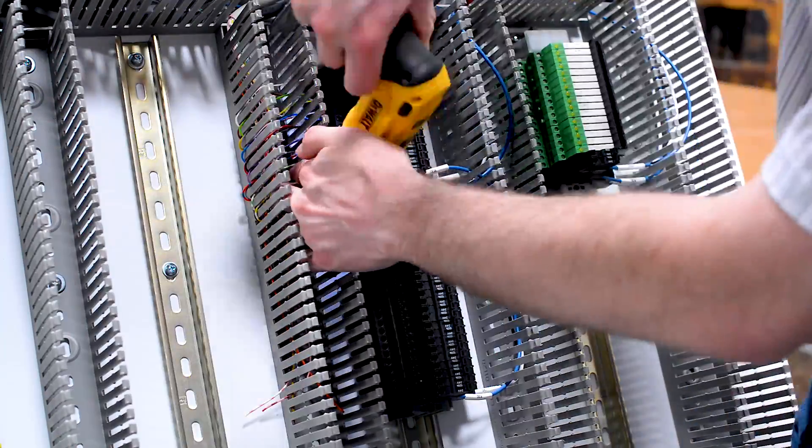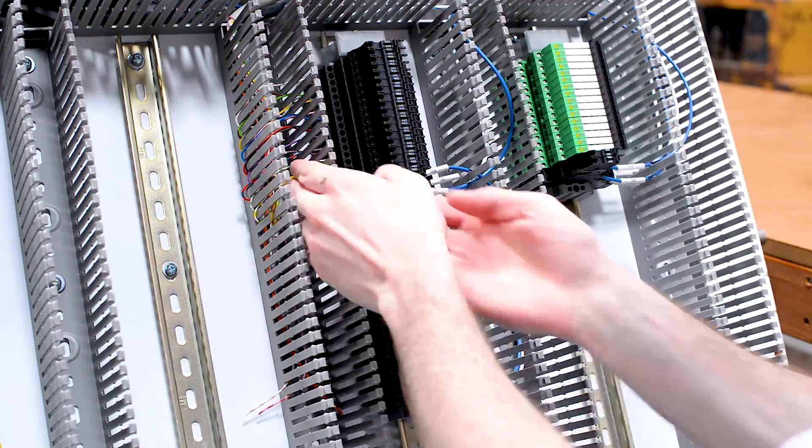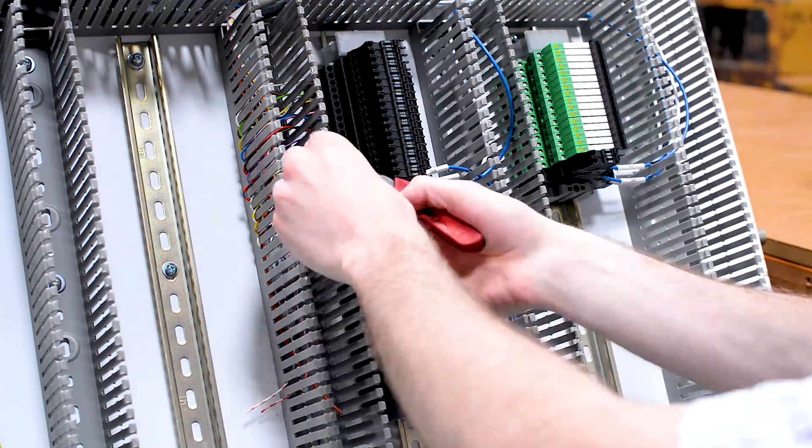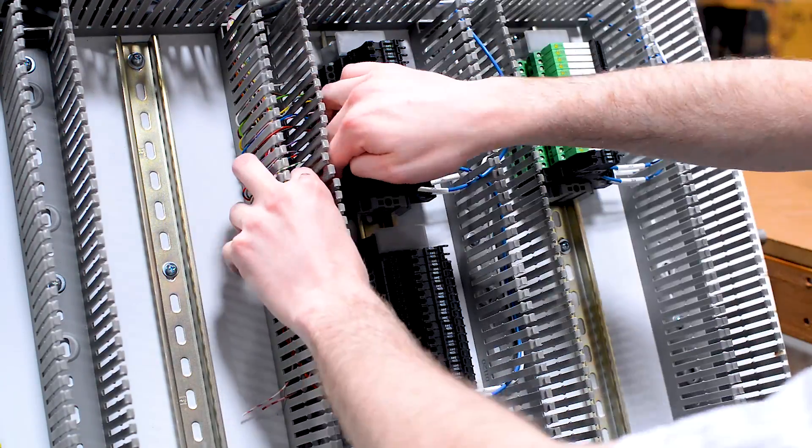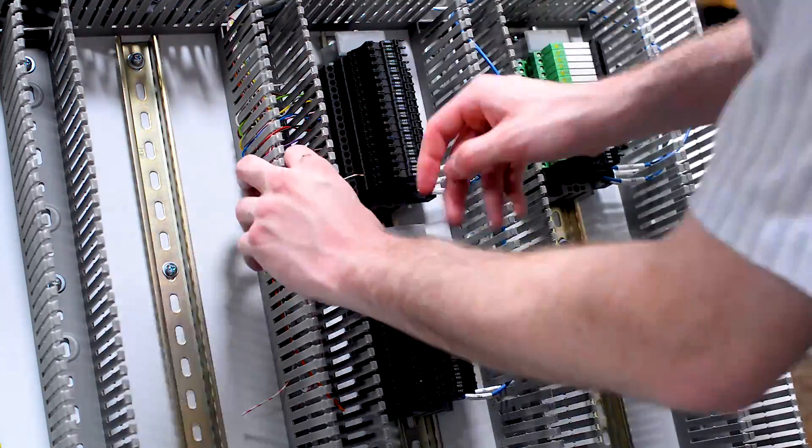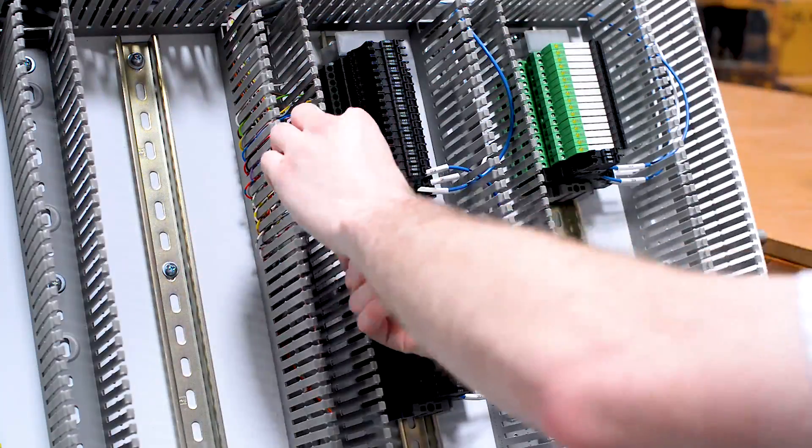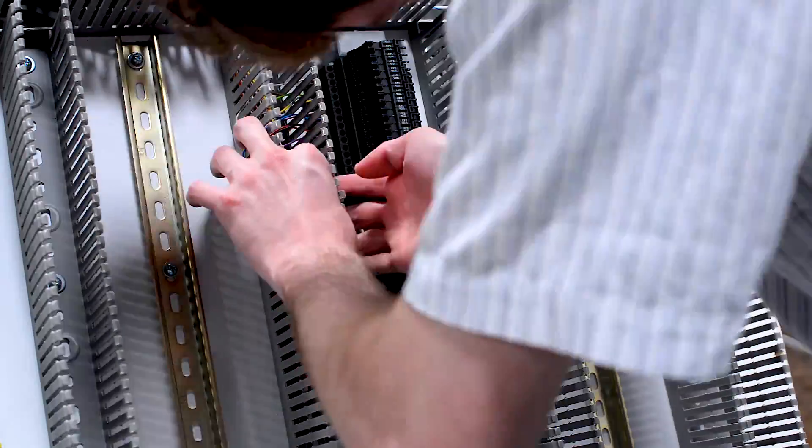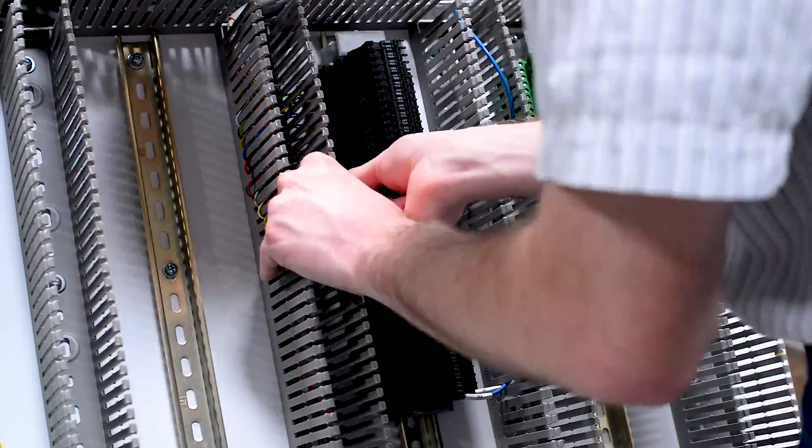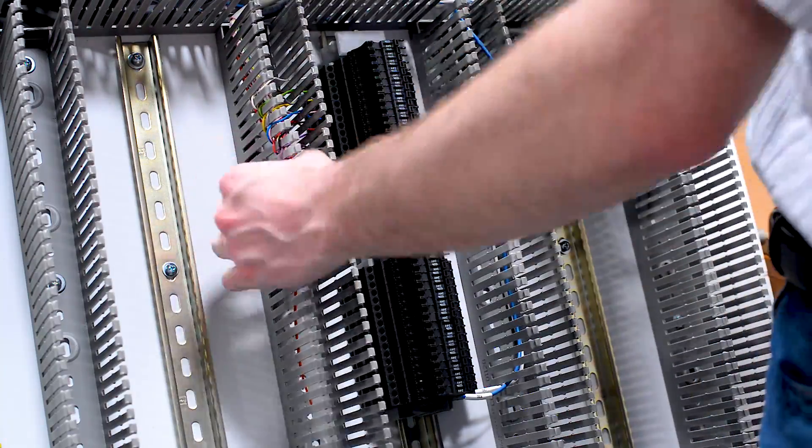It's also important to make sure that we're reading the PLC manual, the hardware manual, so that we can very clearly understand how to wire these digital circuits. Each PLC functions a little bit differently, so they're not all wired the same. So we want to make sure that we understand how the circuit should be wired so that we can make sure that we're wiring a proper loop. We need to make sure that we're putting our power where it needs to go and that we're putting neutral or DC negative where it needs to go so that we ensure that we have a proper loop so that our signals can function and get back to our PLC as expected.